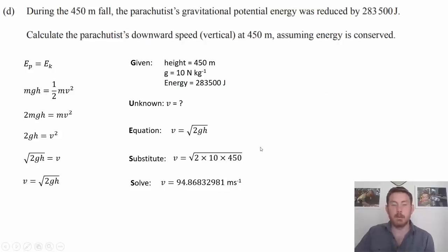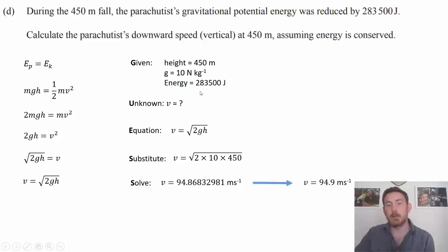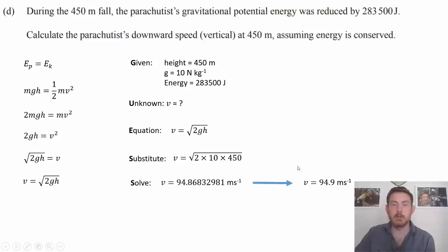Remember to apply the square root to the whole expression — a common mistake is forgetting that step. Rounding to three significant figures gives a velocity of 94.9 meters per second. You're not penalized for significant figures at level one, but it's good practice. There's quite a bit going on there, so that is an excellence level response. I hope that's been helpful — feel free to post any questions and I'll try and get to them as I can.